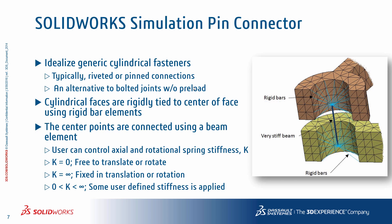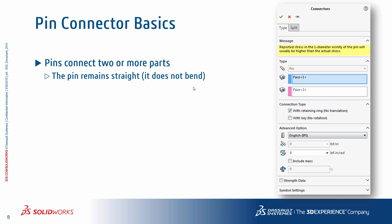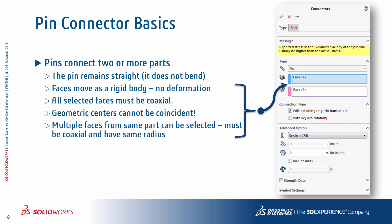A user can control both the axial translational as well as rotational relative motion between the central points. On one extreme, they can be rigidly tied in both translation and rotation, so the joint pretty much behaves like a spot weld. On the other extreme, there can be no stiffness in either direction and the joint behaves like a loose fitting pin. A user can define some finite stiffness to the joint in either or both directions based on knowledge of the expected actual joint. Now, the key assumptions in the pin connector definition are that the pin remains straight and does not bend, the selected faces move as a rigid body with no deformation, those faces must be coaxial, and most importantly the geometric centers cannot be coincident.